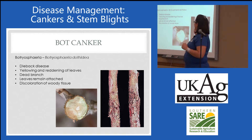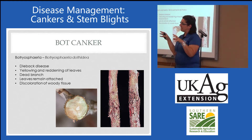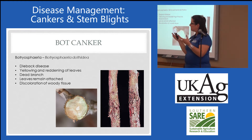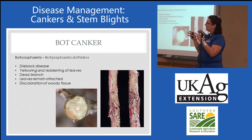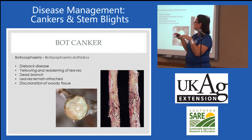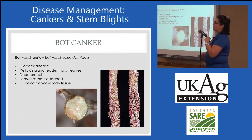Especially during summer is when you'll see a lot of dieback and branch death. When we talk about blight, that's when there's a sudden death — the leaves will remain attached. If it's a really quick death, you'll see the leaves remaining attached to the tips, and if you cut through it, you'll see discoloration of the woody tissue.